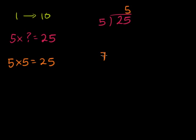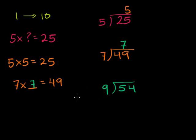If I said 7 goes into 49, that's how many times? That's like saying 7 times what is equal to 49? If you know your multiplication tables, you know that 7 times 7 is equal to 49. Let me do another example: 9 goes into 54 how many times? 9 times what is equal to 54? Even if you don't have it memorized, you could say 9 times 5 is 45, and 9 times 6 would be 9 more than that, so that would be 54. So 9 goes into 54 six times.